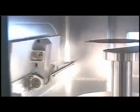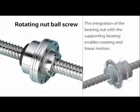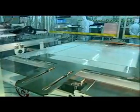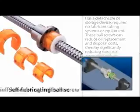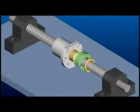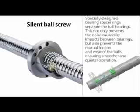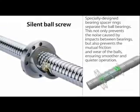Rotating nut ball screws integrate the bearing nut with a supporting bearing, enabling both rotating and linear motion. They are used in semiconductor machinery, industrial robots, woodworking machines, laser processing machines, and conveyor devices. Self-lubricating ball screws have a detachable oil storage device and require no lubricant tubing systems or equipment, reducing oil replacement and disposal costs. Silent ball screws have specially designed bearing spacer rings separating their ball bearings, preventing noise caused by impacts between bearings and preventing mutual friction and wear, ensuring smoother and quieter operation.